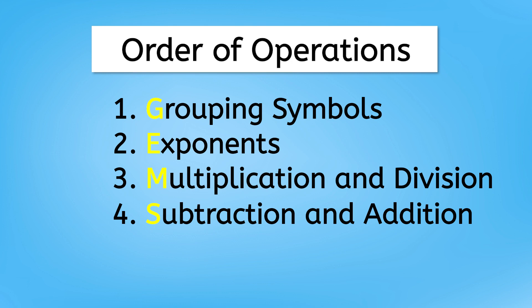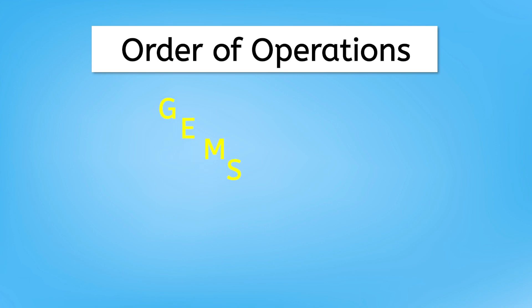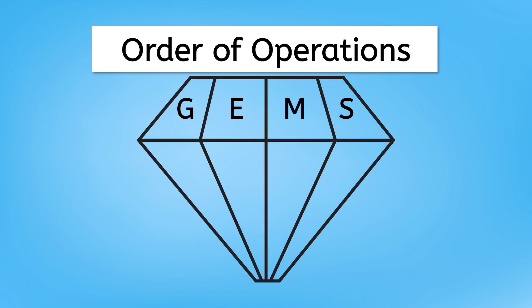Whoa, check this out. If we take the first letter of each of these steps, it spells the word GEMS. That's a neat way to remember the order. G for grouping, E for exponents, M for multiplication and division, and S for subtraction and addition. That's a useful nugget of information.